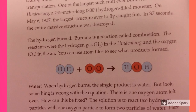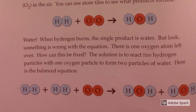The hydrogen burned. Burning is a reaction called combustion. The reactants were hydrogen gas H₂ in the Hindenburg and oxygen O₂ in the air. Using atom tiles to see what products form — water. When hydrogen burns, the single product is water. But look — something is wrong with the equation: there is only one oxygen atom left over. To fix this, you react two hydrogen particles with one oxygen particle to form two particles of water. Here is the balanced equation.